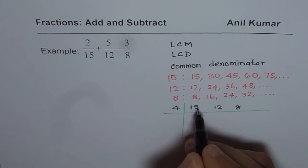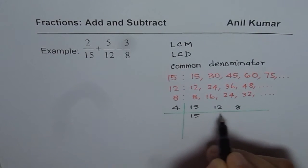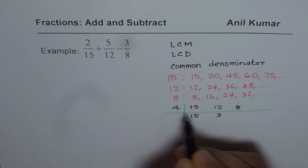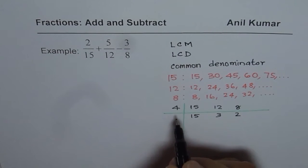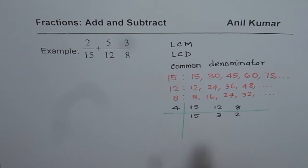We could actually divide them by let's say 4. But 15 cannot be divided by 4. So we just write 15 as such, 12 divided by 4 is 3, 8 divided by 4 is 2. You could have divided by 2 then again by 2 also.